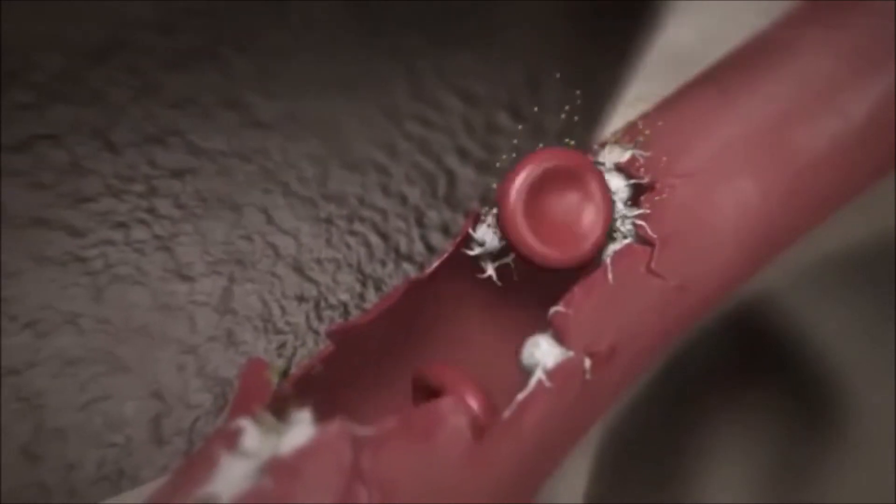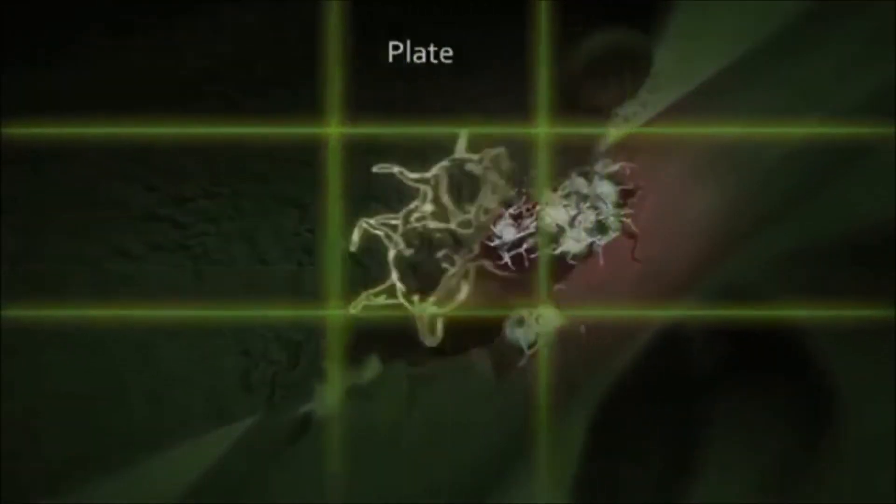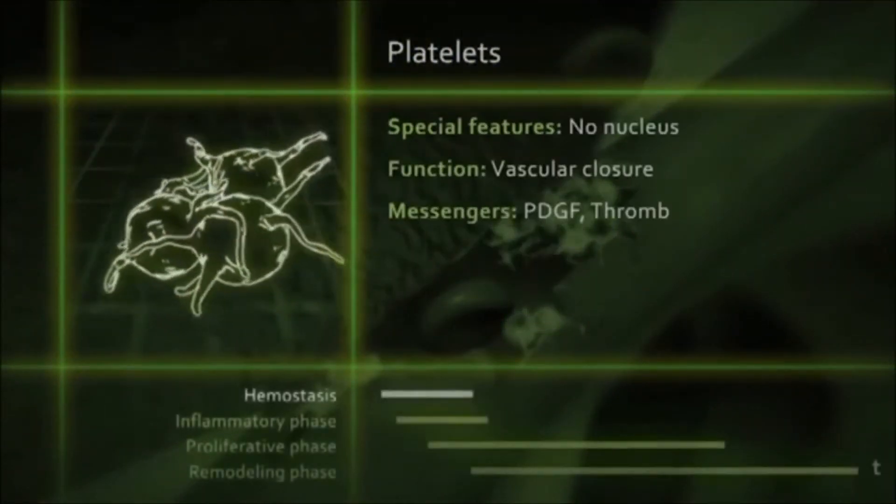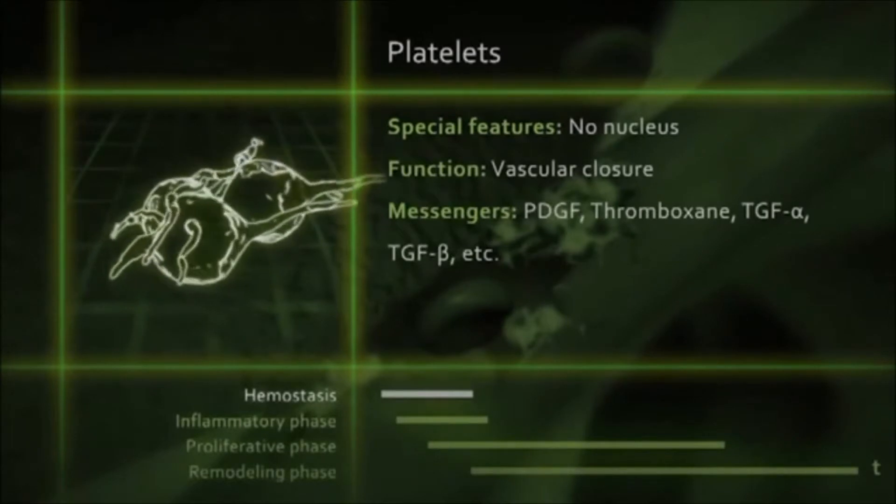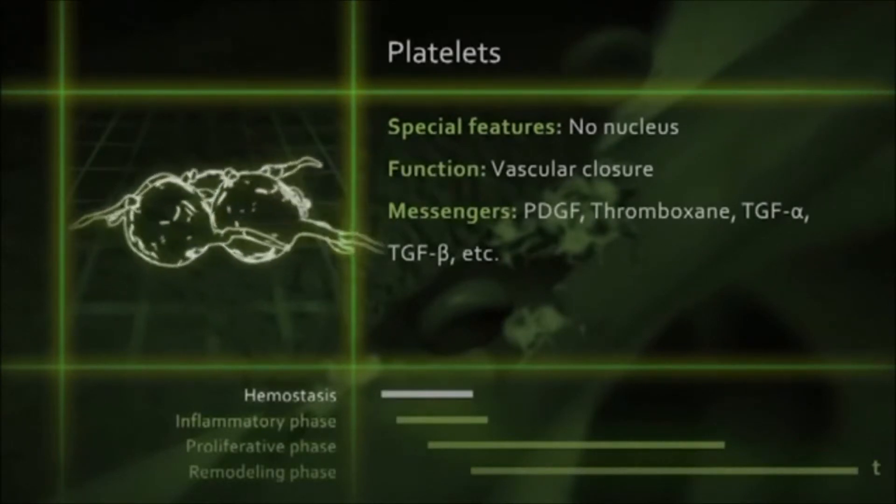Platelets release various messenger substances for cell-to-cell communication, such as thromboxane, which promotes platelet aggregation, or PDGF, platelet-derived growth factor, which stimulates the cell division of fibroblasts.